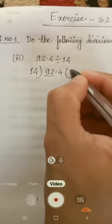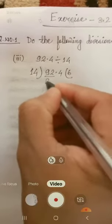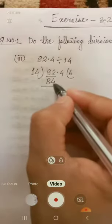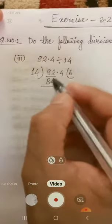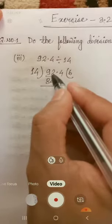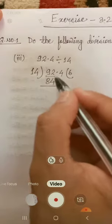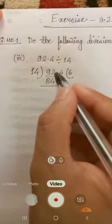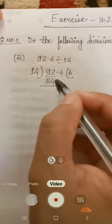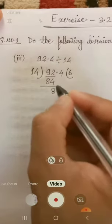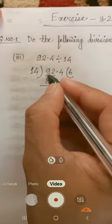6 times 14 is 84. Now 4 is greater number than 2. While subtracting, we should see here 4 is greater than 2, so we cannot subtract 4 from 2. We should borrow 1 from 9. After borrowing 1, we will get here 12. If we subtract 4 from 12, there will be 8.